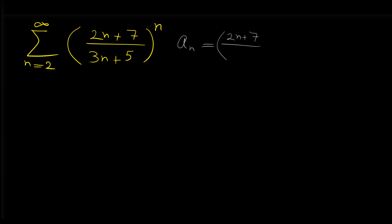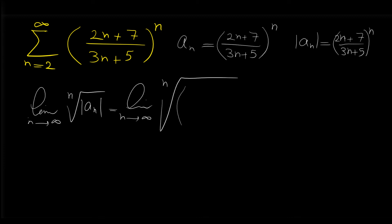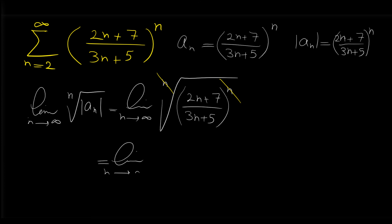The absolute value of a sub n is the same expression because it is positive, so nothing changes. For using the root test, we have to find the limit as n approaches infinity of the nth root of the absolute value of a sub n, which is the nth root of (2n plus 7) over (3n plus 5), all to the power of n. If we cancel the power with the nth root, we get the limit as n approaches infinity of (2n plus 7) over (3n plus 5).